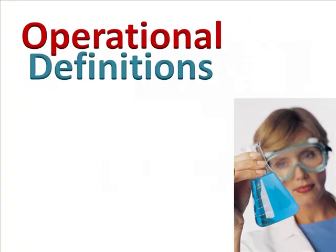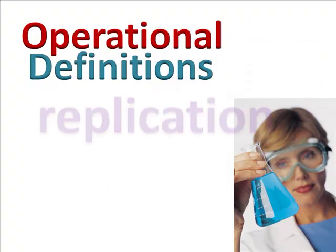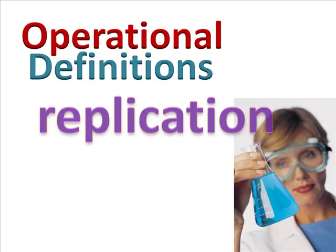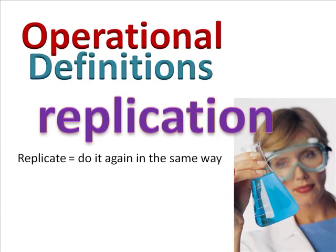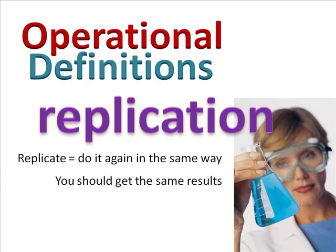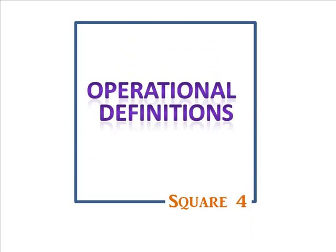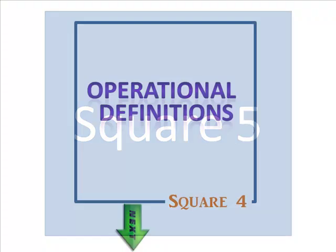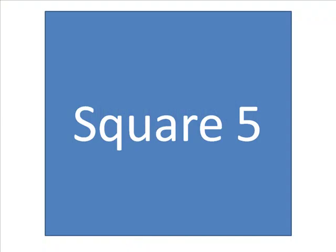The main value of generating operational definitions is the ease of replication. Anyone who wants to conduct their own study can tell exactly how each variable was defined. In square four, we specified the relationship between variables and operationally defined each of them. In square five, we'll pick a design.